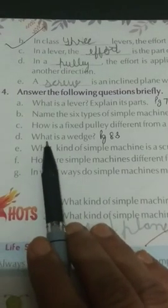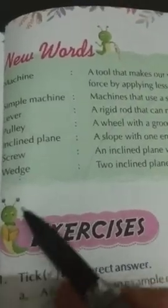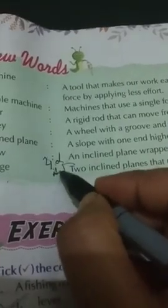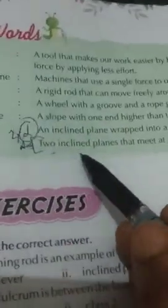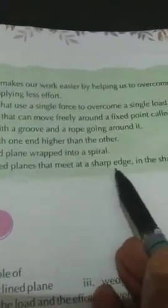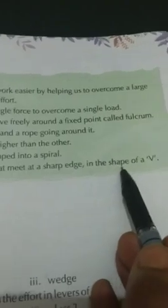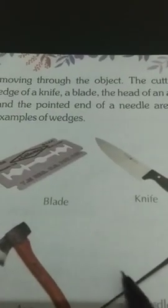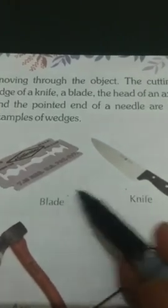Part D: What is a wedge? See page number 83, wedge in new words. Answer: Two inclined planes that meet at a sharp edge in the shape of a V. Draw one diagram out of these four, any one diagram you have to draw.